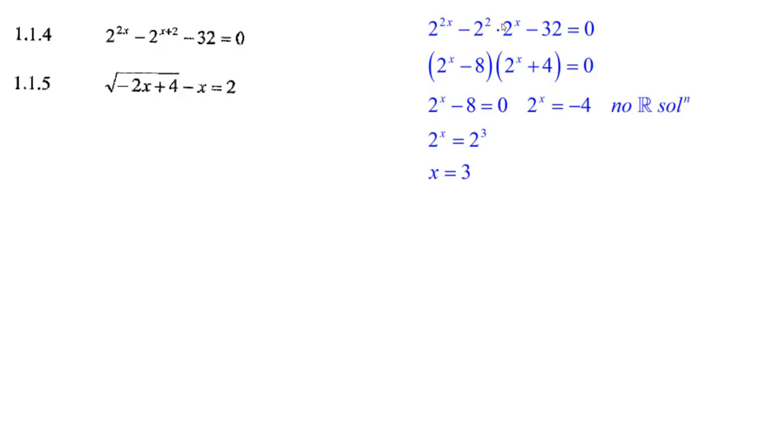There's really a 4 there, 4 times 2 to the x. This is 2 to the 2x, and you split it up and make it 2 to the x times 2 to the x. There it is. It's like a foil thing.